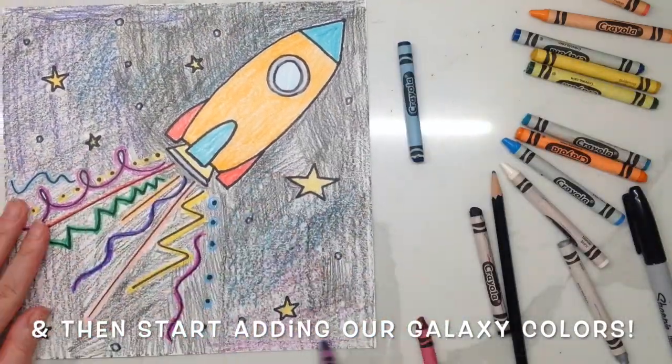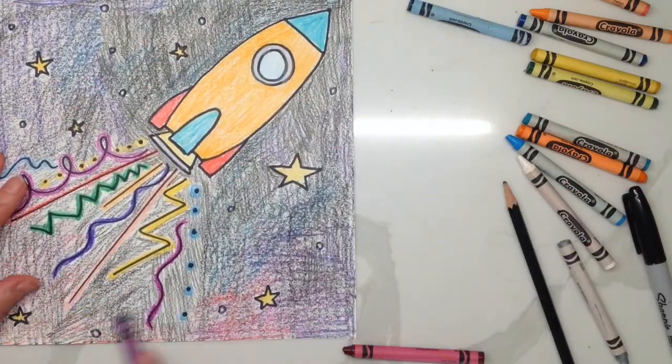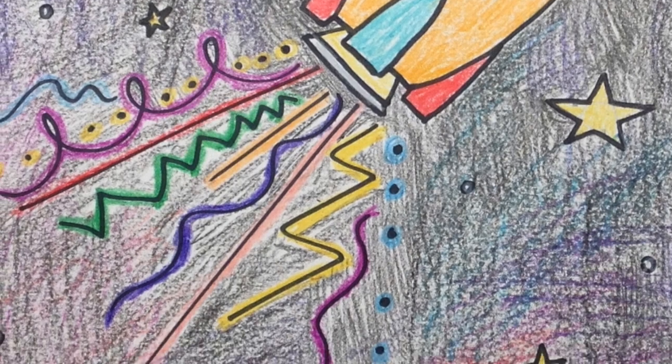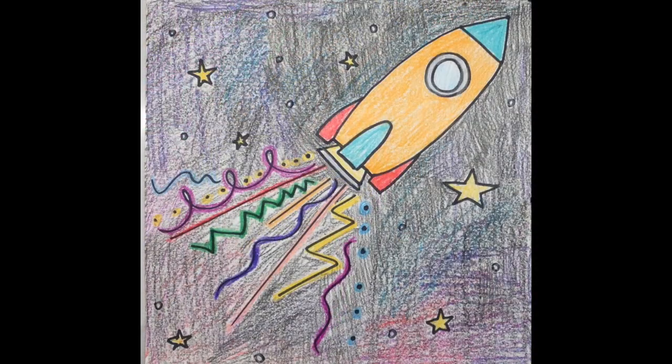You can then start adding in galaxy colors on top. Just remember to use these galaxy color overlays to fill in any of the white spaces we might have missed while we were doing our layer of black. Great job! You're all finished!